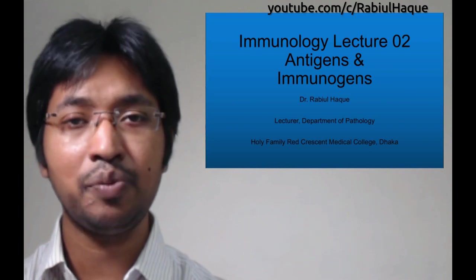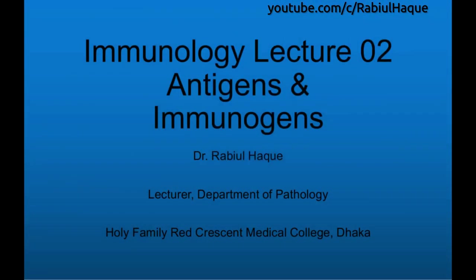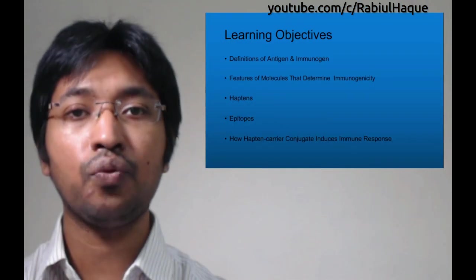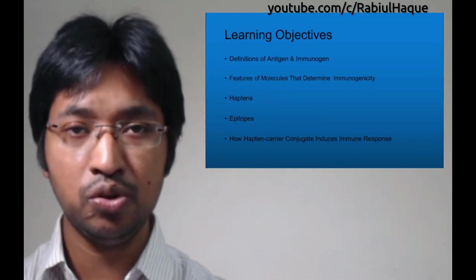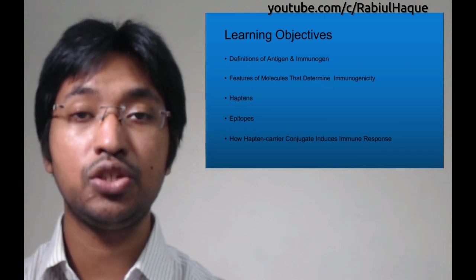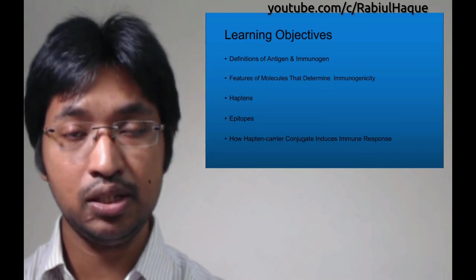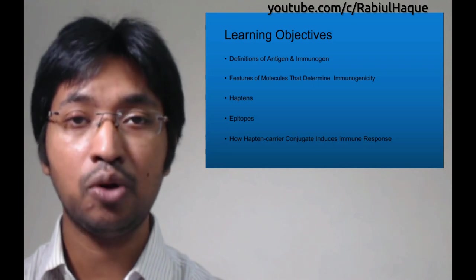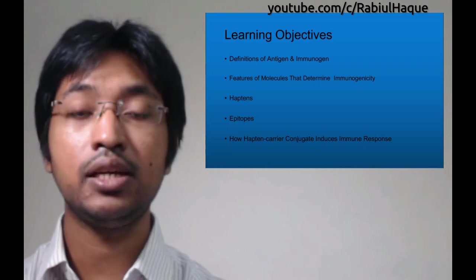Today's topic is antigen and immunogen. This is the second lecture of our ongoing immunology series. In this video, we will learn the definition of antigen and immunogen, the features of molecules that determine immunogenicity. We will also talk briefly about haptens and epitopes.